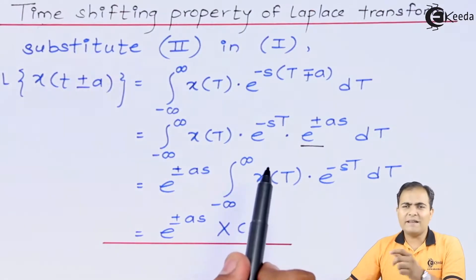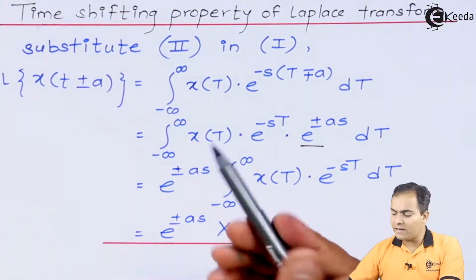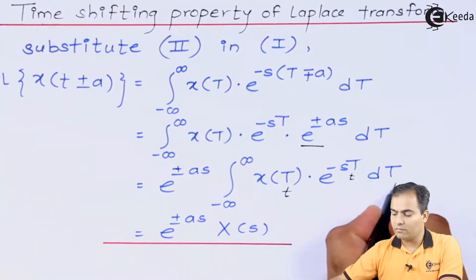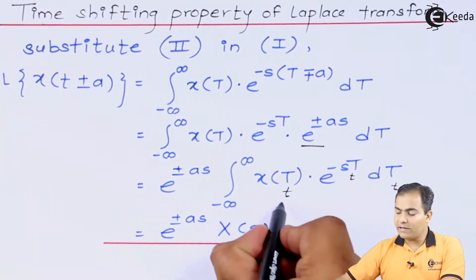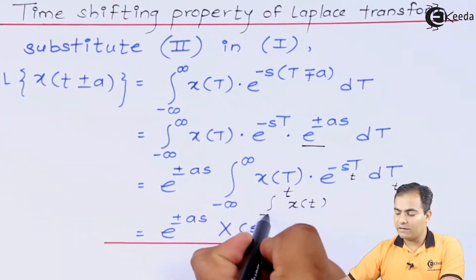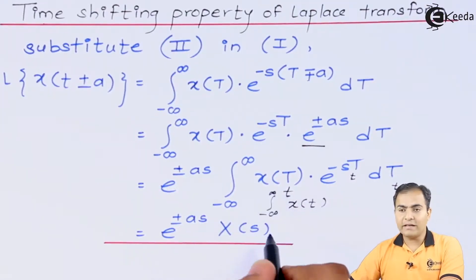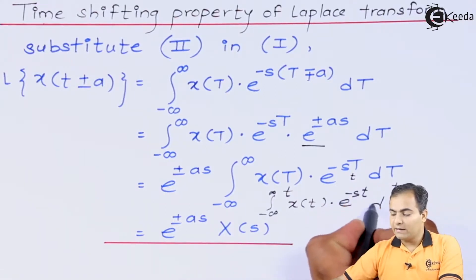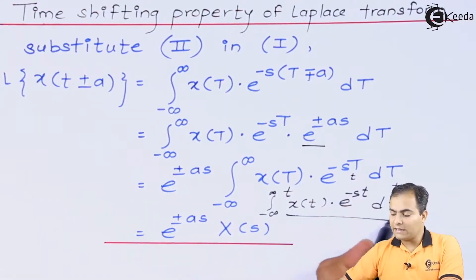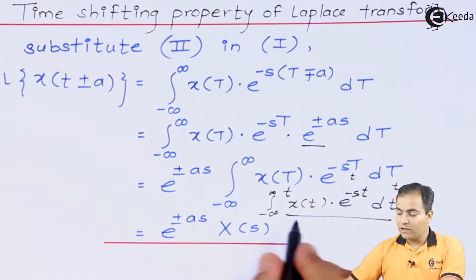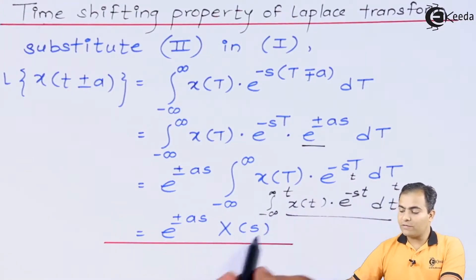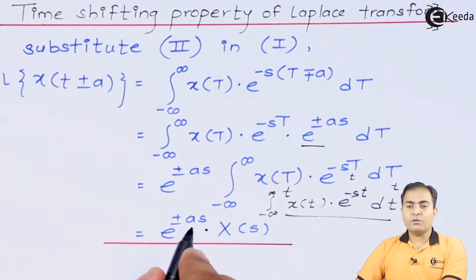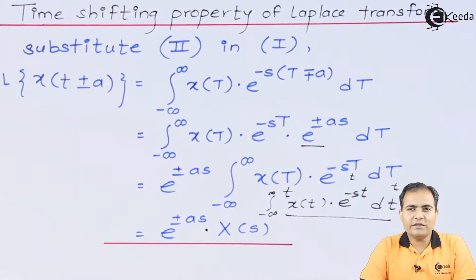What remains is the integration of x(T) e to the power minus sT dT. As I told you, T is a dummy character — you can write small t as well. If I write small t, then the equation becomes the integration from minus infinity to infinity of x(t) e to the power minus st dt, which is nothing but the definition of the Laplace transform. According to the definition, we can write this part as X(s). Likewise, you can prove this time shifting property.